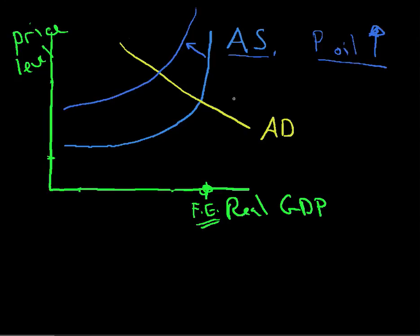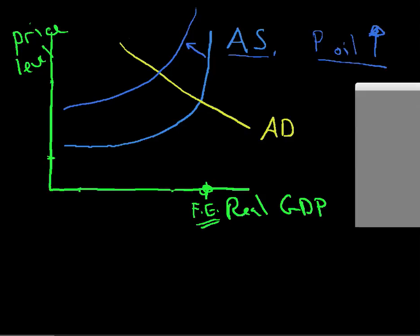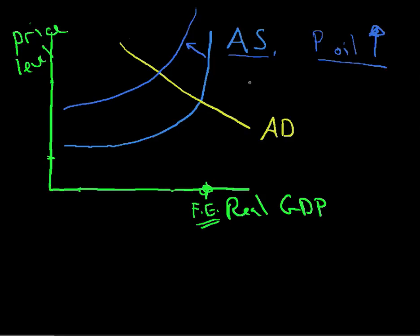What does that mean to our equilibrium point? Let's change color so it's a little bit easier to see. The equilibrium point was here before. Now it's way back here, isn't it? What's happened? Output has gone down to here. And what's happened to the price level? The price level has gone up from there to there.